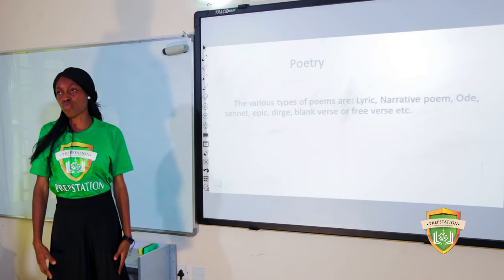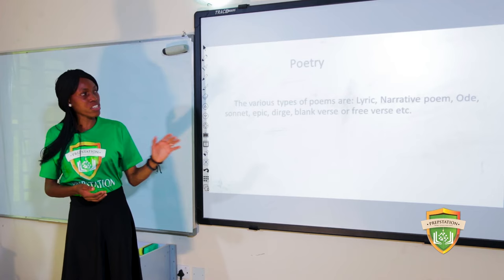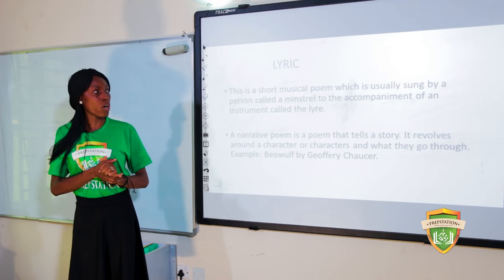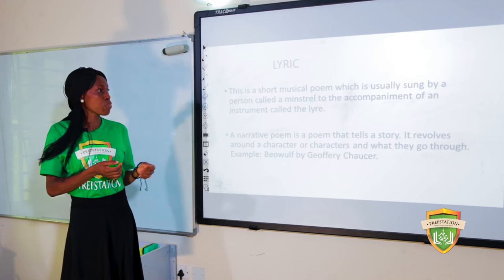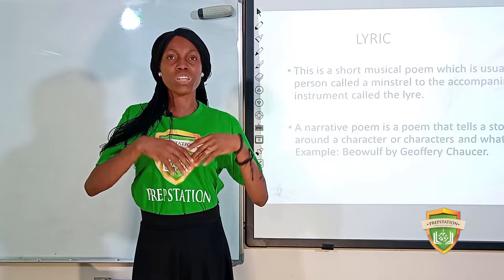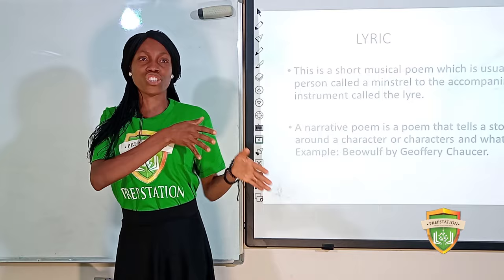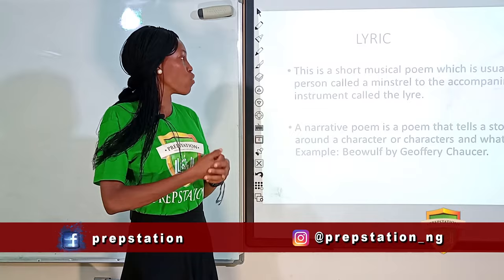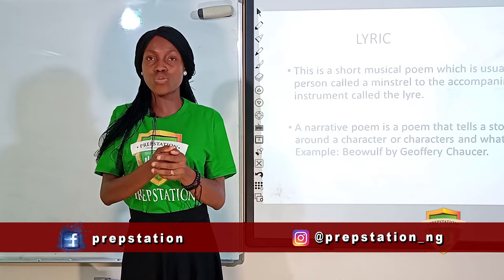Now let's move on to poetry. The various types of poems include lyric, narrative poem, ode, sonnet, epic, dirge, blank verse or free verse, and many more. A lyric is a short musical poem usually sung by a minstrel to the accompaniment of an instrument called the lyre. This was common in ancient societies like the Greeks.